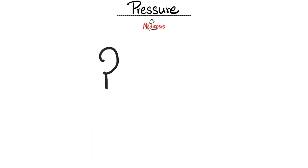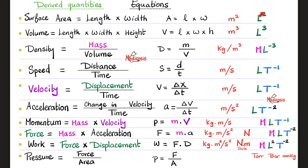Next, how about pressure? Can you find the dimensional formula for pressure? Let me know your answer in the comments. Here is a quick review of everything discussed today: surface area is length times width, volume is length times width times height, density is mass over volume, speed is distance over time, velocity is displacement over time, acceleration is velocity over time, momentum is mass times velocity, force is mass times acceleration, work is force times displacement, and pressure is force divided by area. These are the measuring units and dimensional formulas using the MLT method.